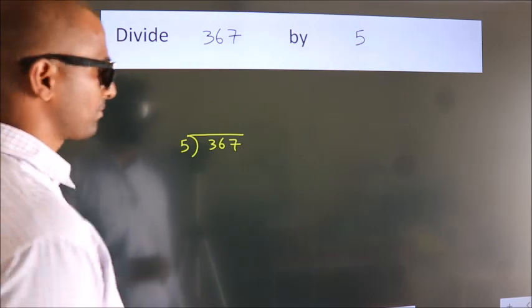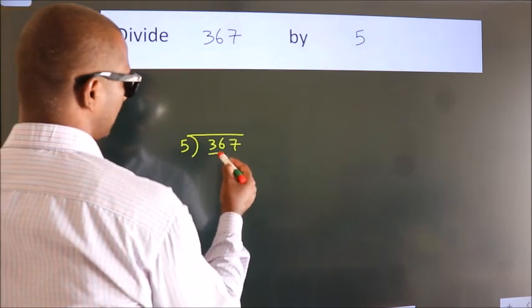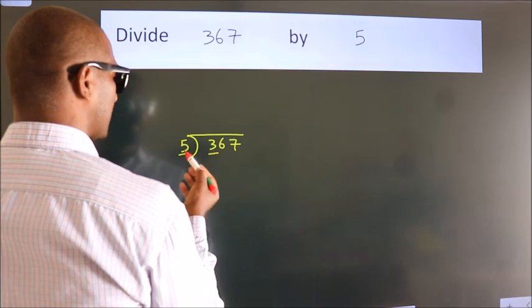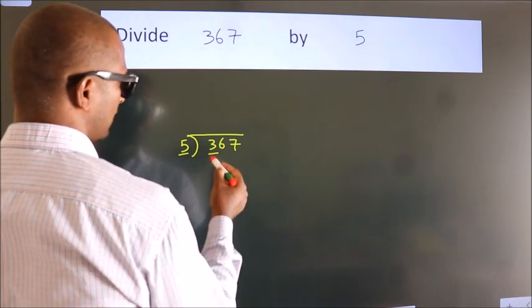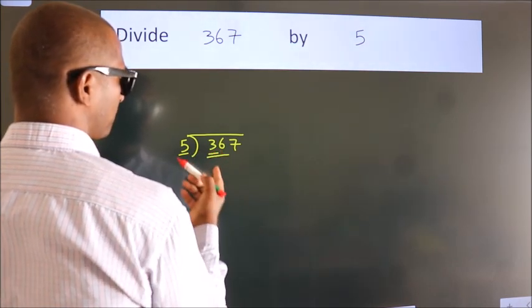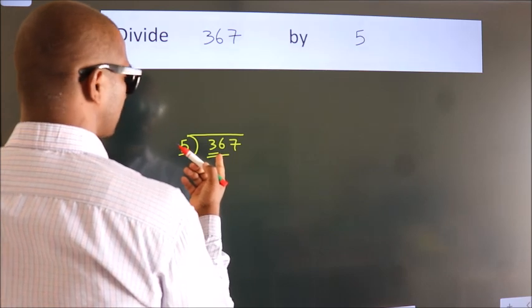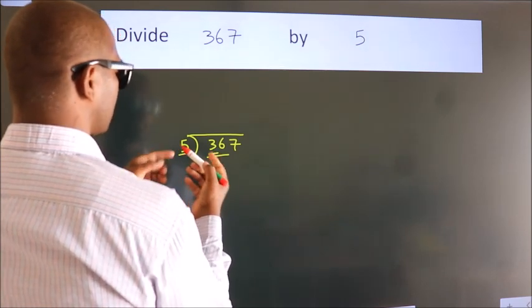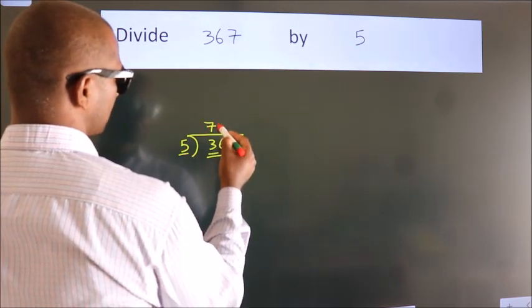Next, here we have 3, here 5. 3 is smaller than 5, so we should take 2 numbers: 36. A number close to 36 in the 5 table is 5 times 7 equals 35.